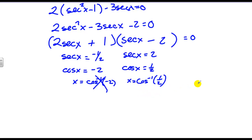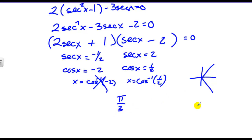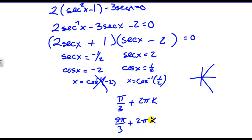Cosine can't be greater than one in absolute value, so cosine equals negative two has no solution. Where does cosine equal one half? The x-values equal one half somewhere in the first quadrant and somewhere in the fourth quadrant — at pi over three and five pi over three. But since we need all values, every time we go around the circle again, we add two pi k. So x equals pi over three plus two pi k, and x equals five pi over three plus two pi k.